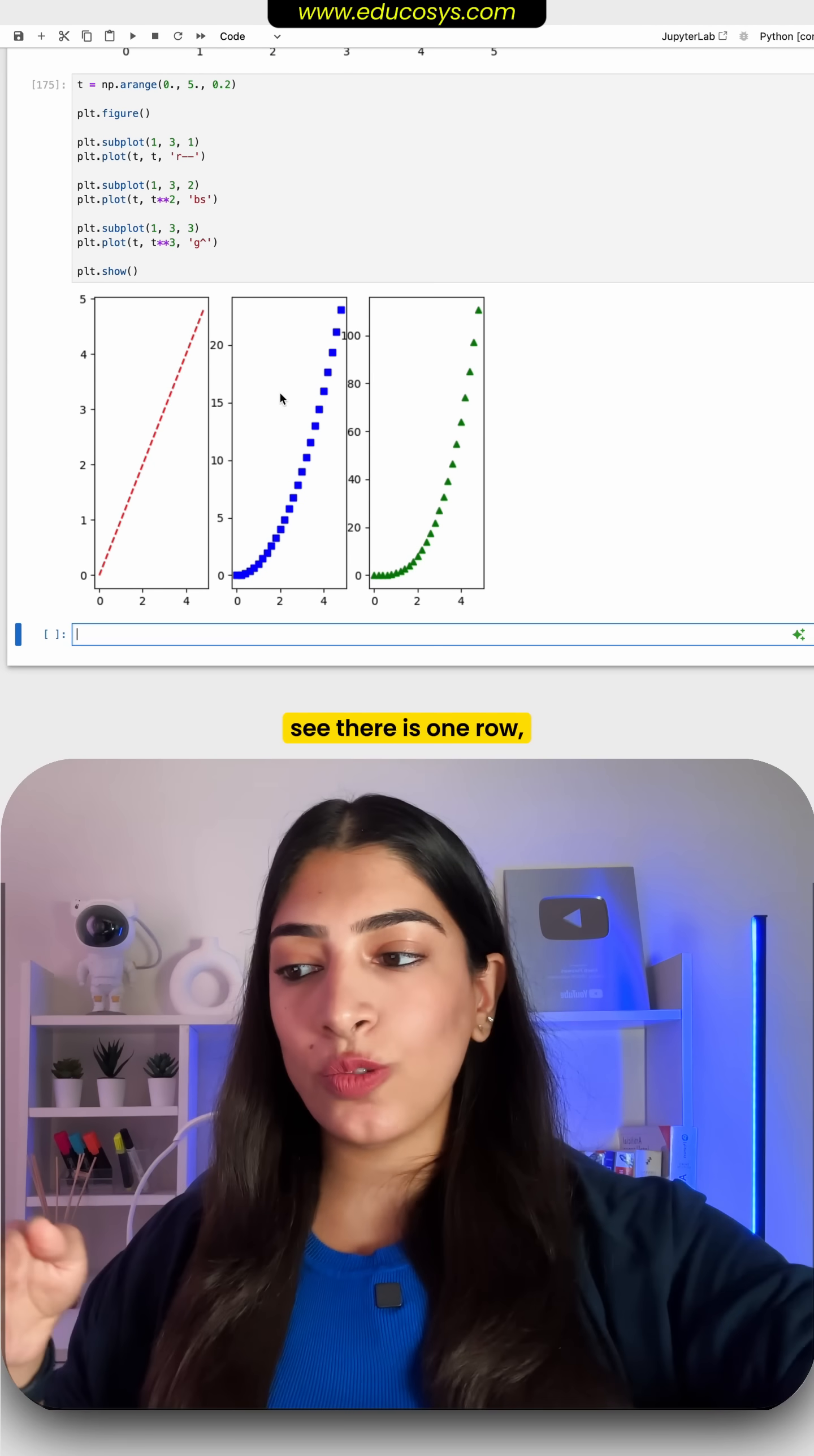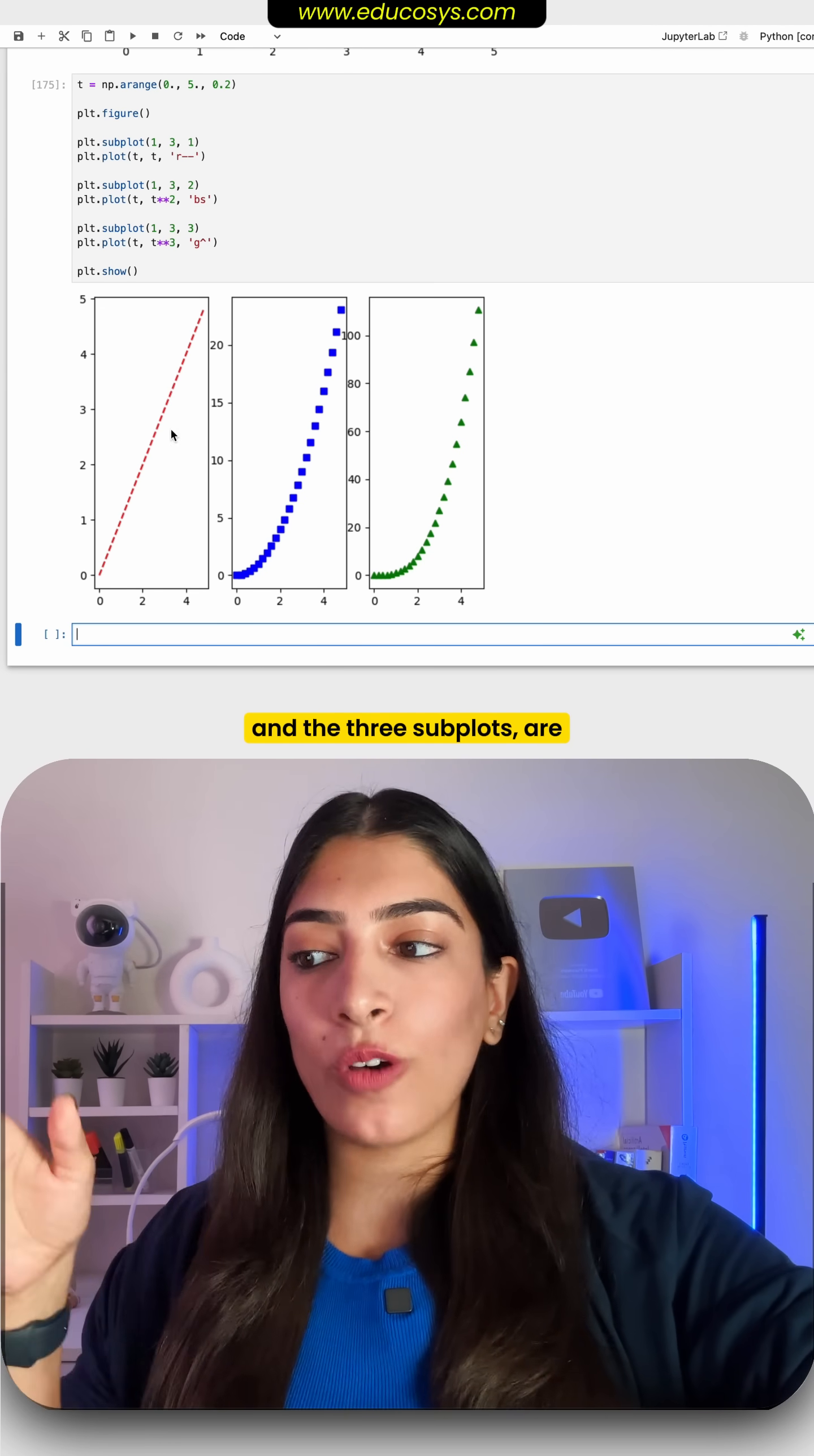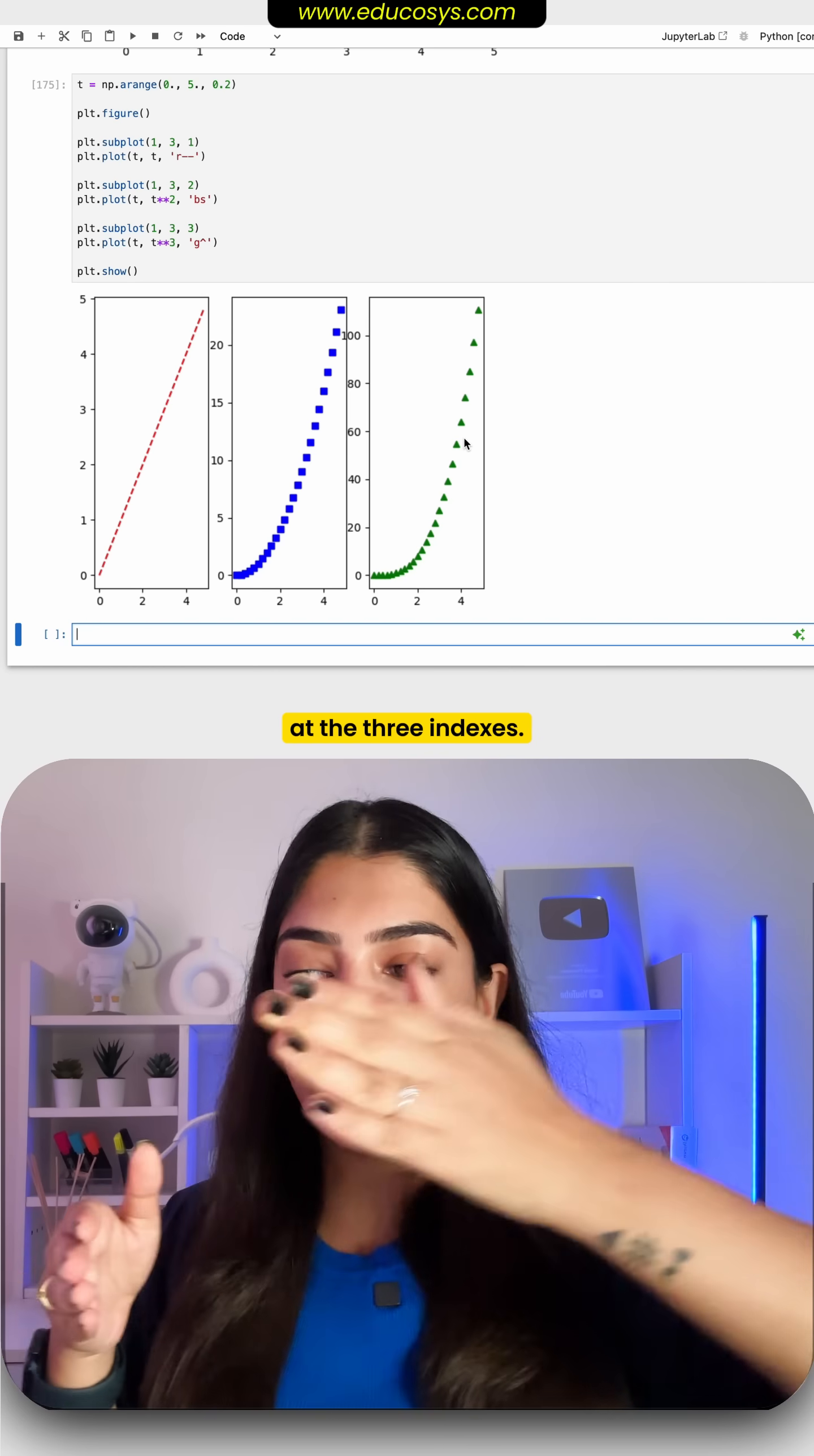Now if I run this see there is one row three columns and the three subplots are at the three indexes.